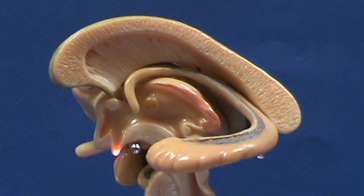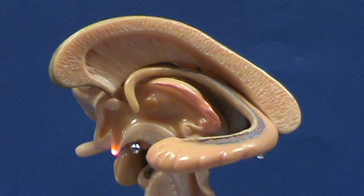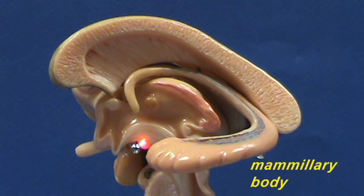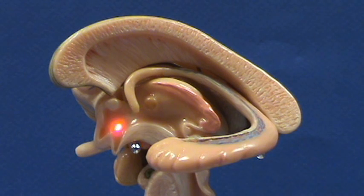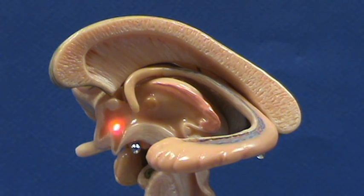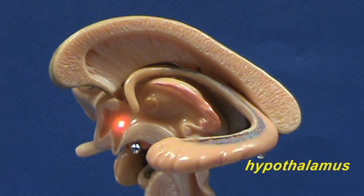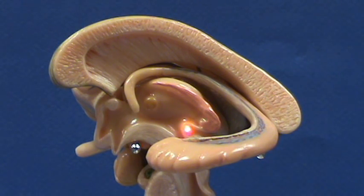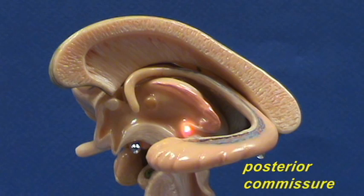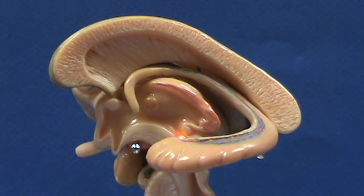Right over here you have the infundibulum. The pituitary would be hanging right below this point here. Right over here you have the mammillary body. And right in this region, right below the hypothalamic sulcus, this is the hypothalamus. Back over here is the posterior commissure, and this is the beginning of the cerebral aqueduct.